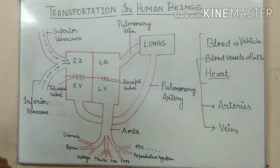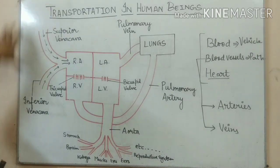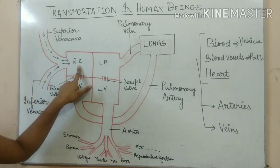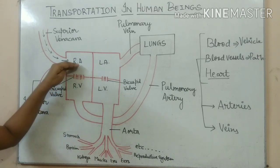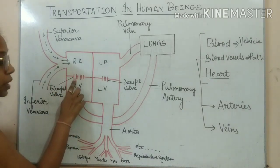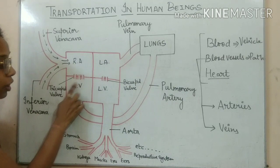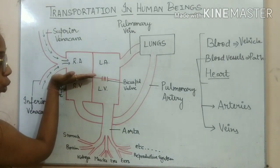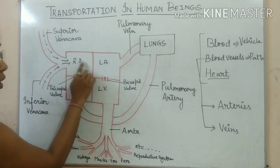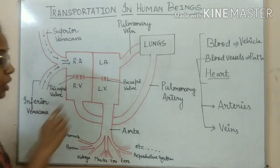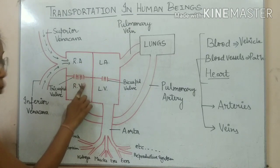Deoxygenated blood — that is, oxygen-deficient blood which needs oxygen — comes from all parts of the body to the right auricle. From the right auricle, this deoxygenated blood comes into the right ventricle via structures called tricuspid valves. These valves are closed while blood is filling in the right auricle, but once filling is complete, they open and the right auricle passes the blood into the right ventricle.